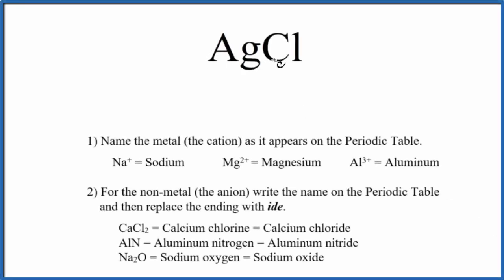To write the name for AgCl, we first need to know what type of compound we have. Since we have a metal and a non-metal, we're going to treat this as an ionic compound.